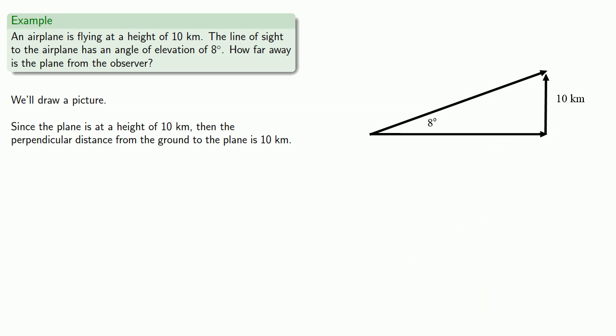And finally, the problem asks us to find the distance from the plane to the observer. Well, that's this length here, the hypotenuse of our right triangle. We'll give it a creative name. How about X.